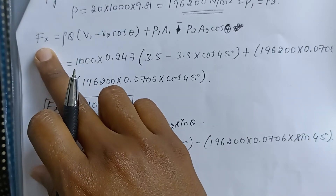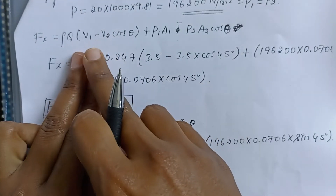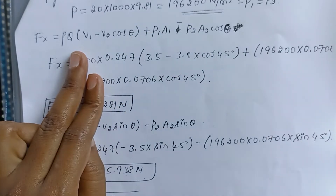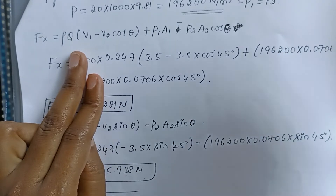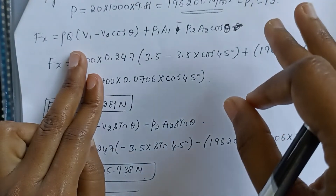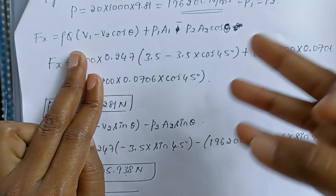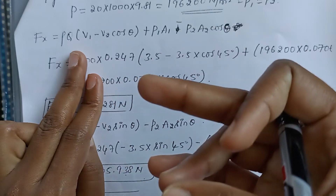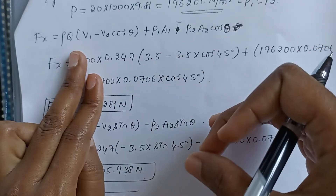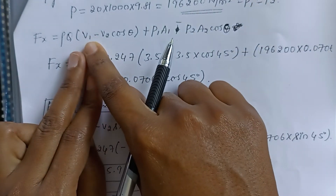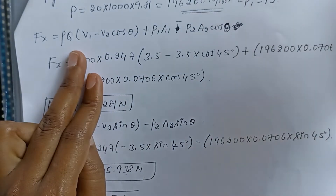Coming back to the Fx equation, the unknown terms v1 and v2 represent velocities at the inlet and outlet. In this question, only one velocity is given — 3.5 m/s. Since the pipe diameter is constant, that velocity applies at both inlet and outlet. So v1 = v2 = 3.5 m/s. Similarly, since the diameter is constant, pressure remains the same throughout.